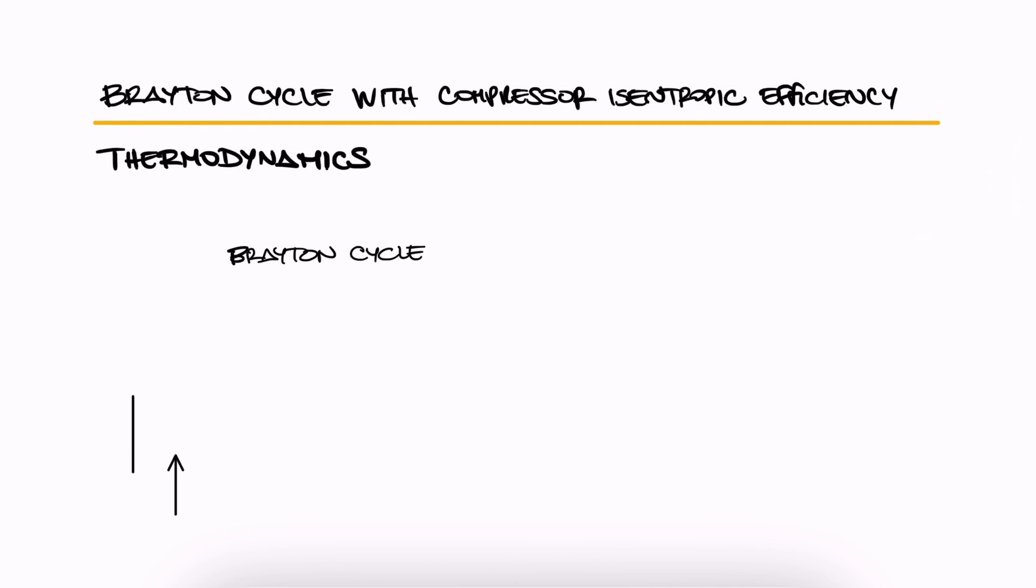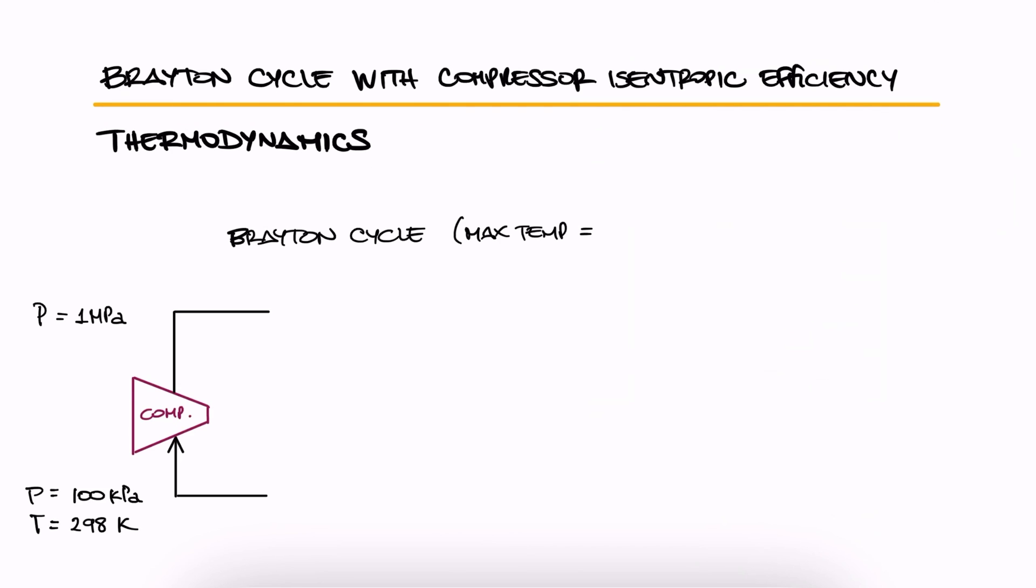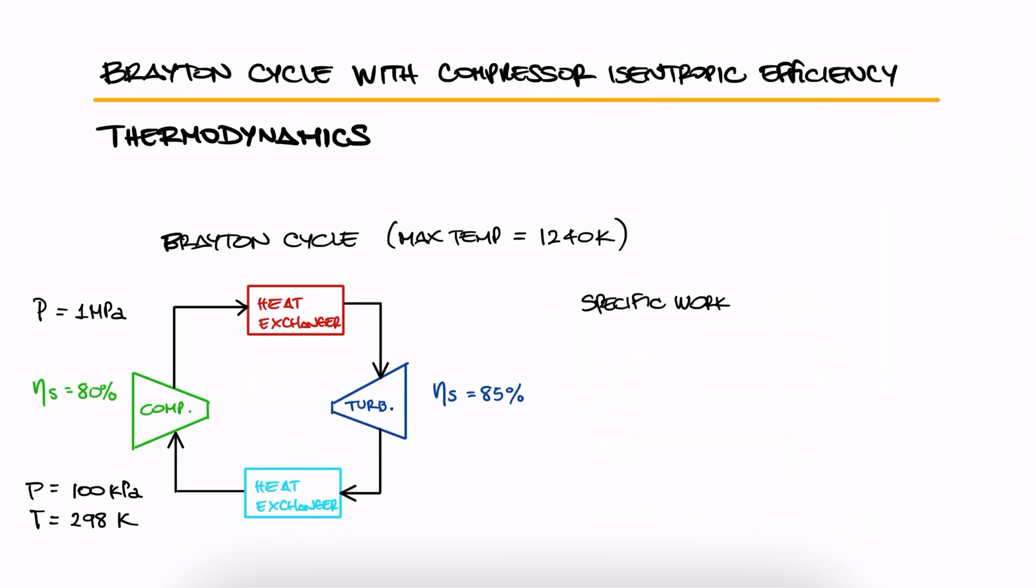In a Brayton cycle, air enters the compressor at 100 kilopascals and 298 kelvin. The pressure leaving the compressor is 1 megapascal and the maximum temperature of the cycle is 1240 kelvin. Let's say we know that the isentropic efficiency is 80% for the compressor and 85% for the turbine. What is the specific work of the compressor and what is the temperature at the exit of the compressor?